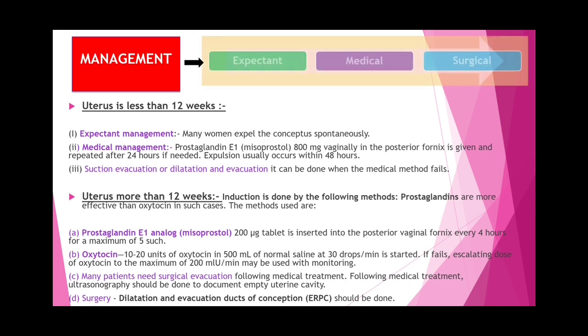Management of missed miscarriage is by three processes: expectant, medical, and surgical. If uterus is less than 12 weeks, expectant management is preferred as many women expel the conceptus spontaneously. Medical management: prostaglandin E1 (misoprostol) 800 mcg vaginally in the posterior fornix, repeated after 24 hours if needed; expulsion usually occurs within 48 hours.